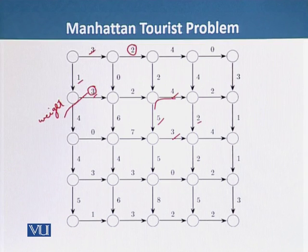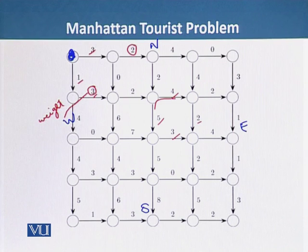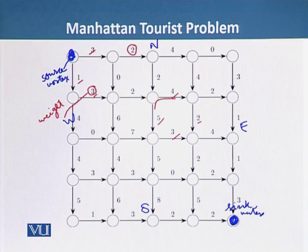The tourist must decide among all possible paths between the northwestmost point and the southeastmost point. The northwest starting point is called the source vertex, and the southeast endpoint is called the sink vertex. The weight of the path from source to sink is simply the sum of weights on its edges, representing the overall number of attractions visited.